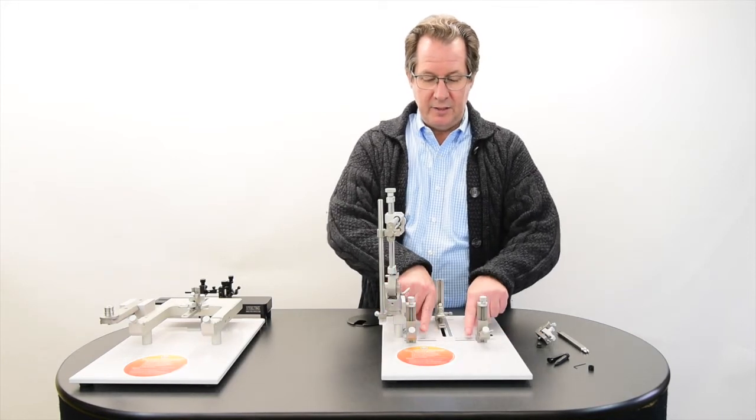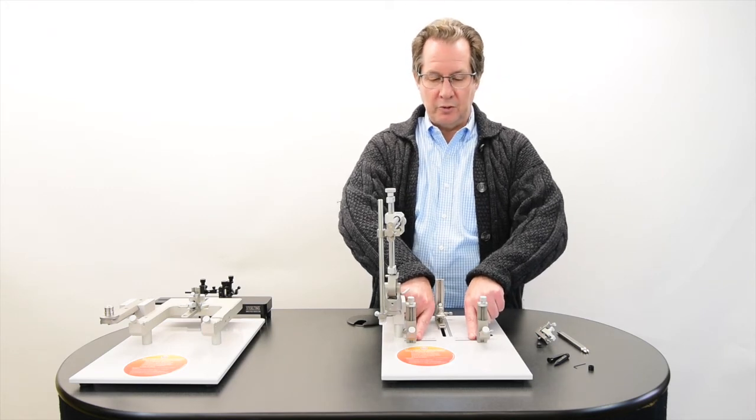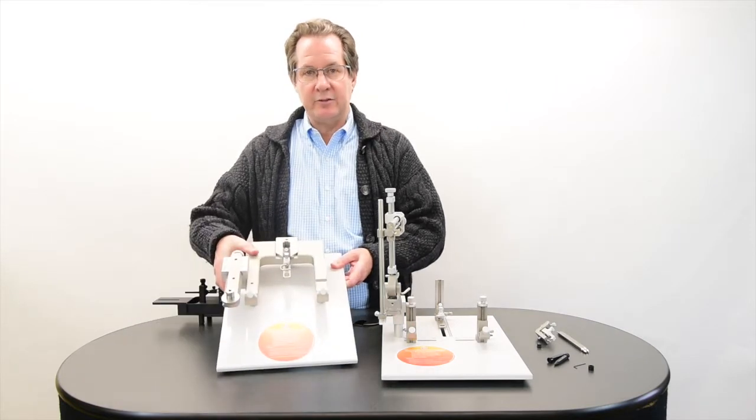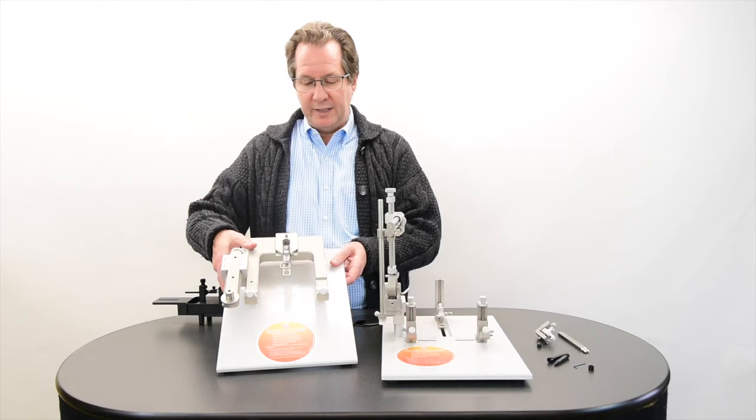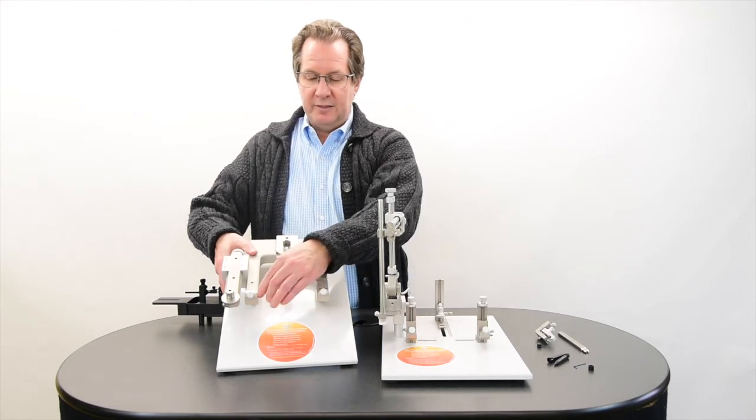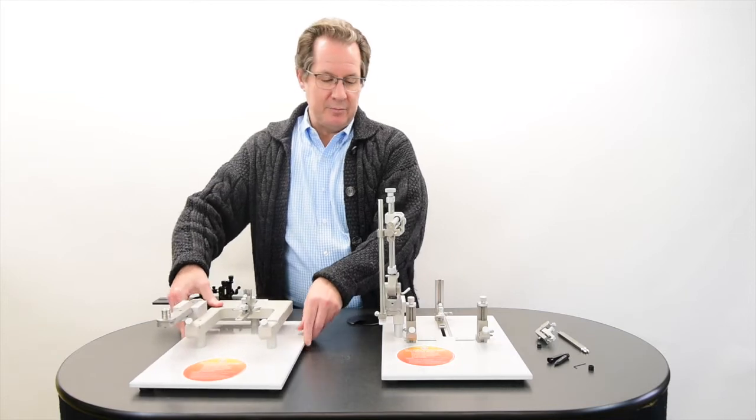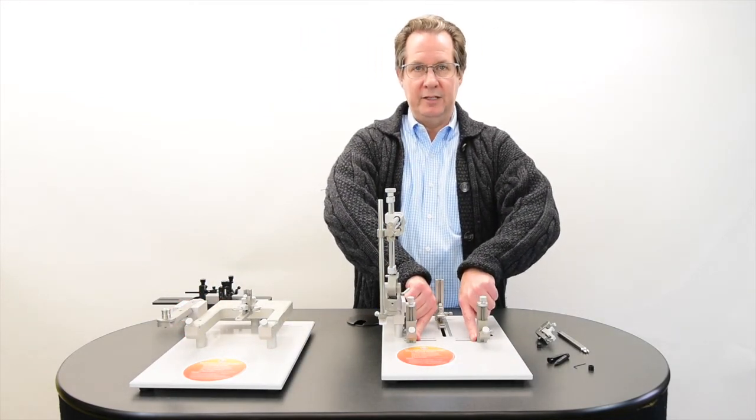Those vertical posts all the way to the side are very similar to what you may have seen in other stereotaxic instruments. This is the more traditional u-frame or what we call our lab standard series. This distance between this u-frame will be the exact same distance when these vertical posts are all the way out to the edge.